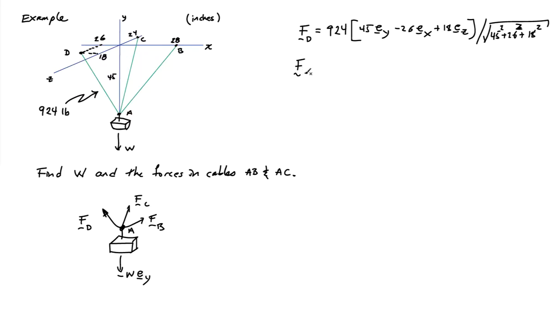If I look at the force in cable B, I don't know what it is. It has some magnitude, but I do know its direction. It's pointing 45 units in the Y direction, then 28 units in the X direction, and it has no component in the Z direction. I have to normalize that by the square root of 45 squared plus 28 squared to get the direction.